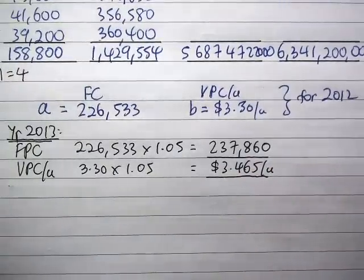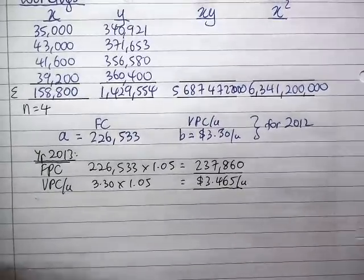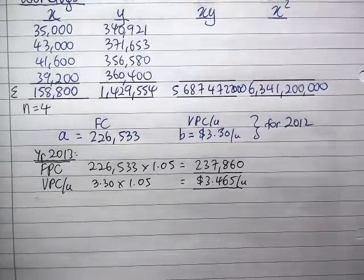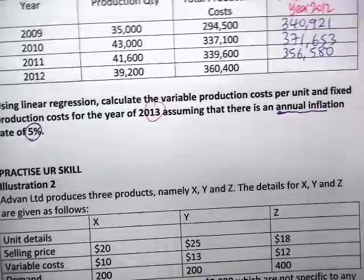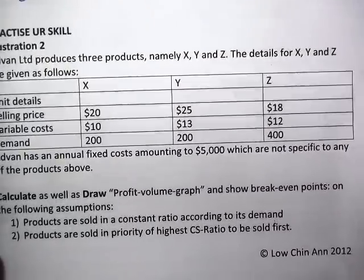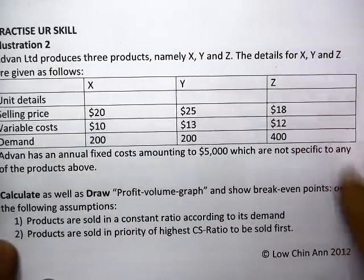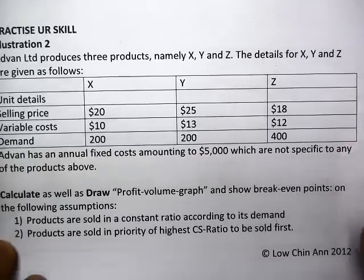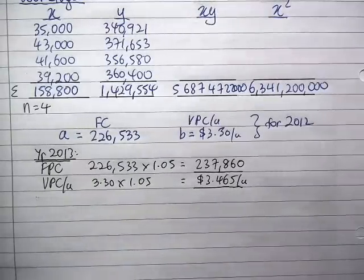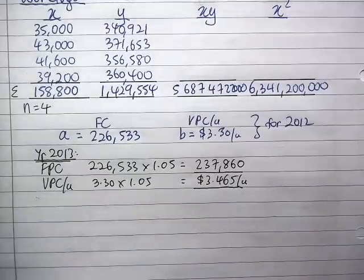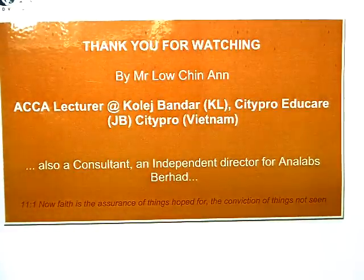So this is the illustration on how you should apply using that calculator to derive your A and B value using regression. We're going to get ready for the second illustration on how you're going to draw your CVP graph in the coming videos. Thank you very much class. Thanks for watching.